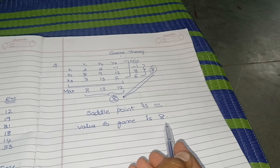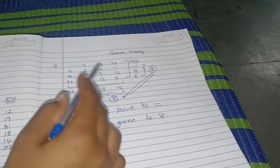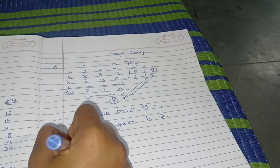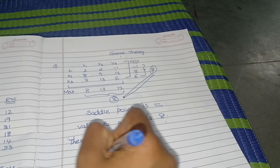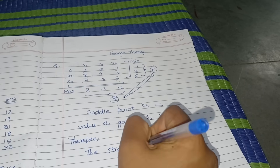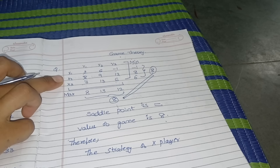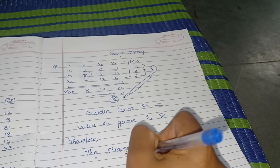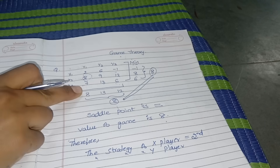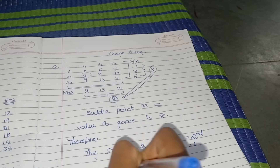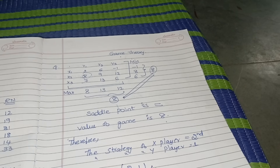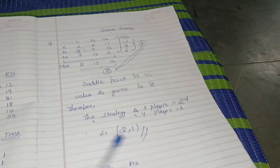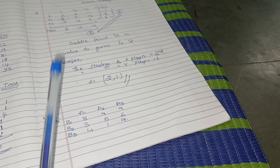Since the saddle point is 8, the value of the game is 8. The X player has the saddle point in the second row, so the strategy of X player is row 2. The Y player has the saddle point in the first column, so the strategy of Y player is column 1. Therefore the strategy is written as (x2, y1), or (2, 1). This completes the 8-mark answer when a saddle point exists.